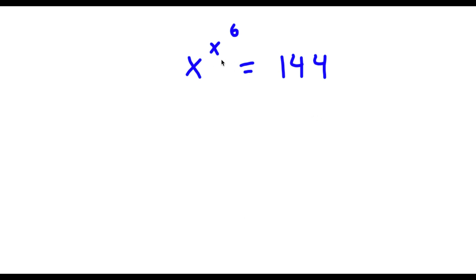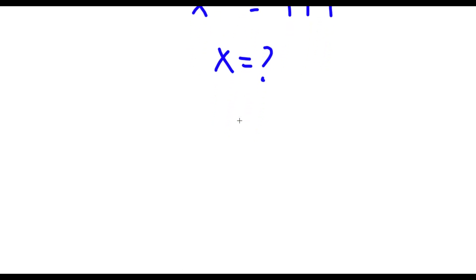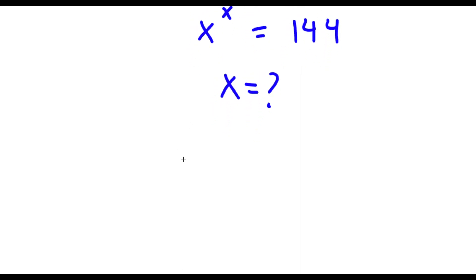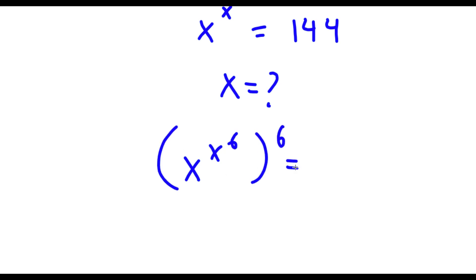Alright, so I have x to the power of x to the power of six is equal to 144. So I want to find the value of x. To start, I'm going to take the power of six on both sides.